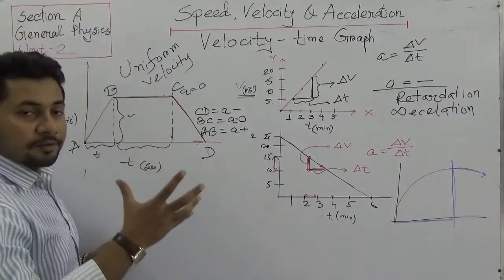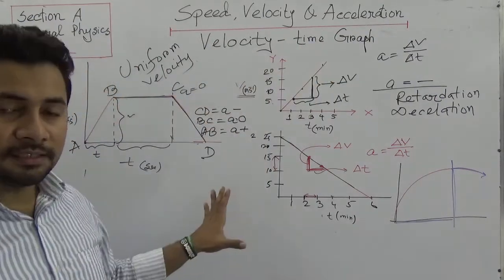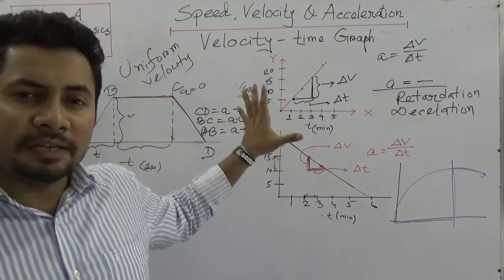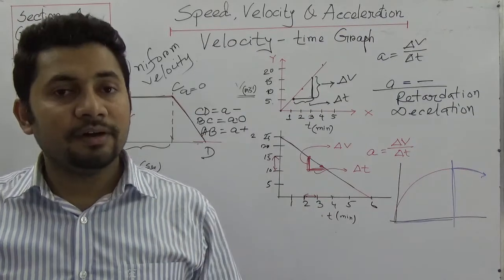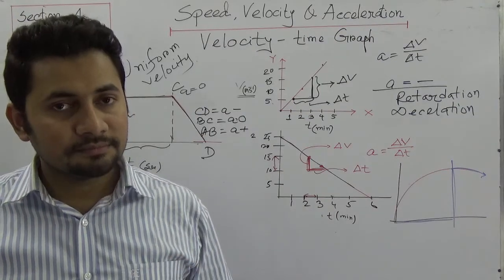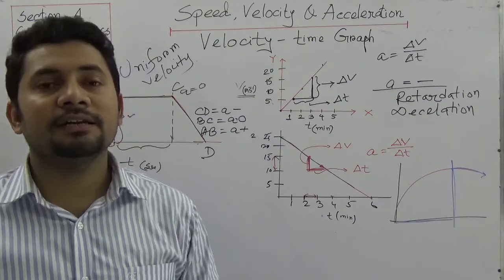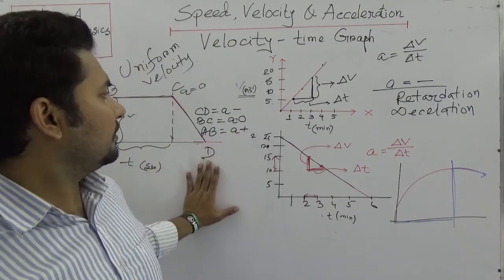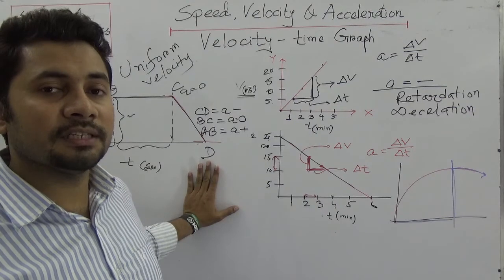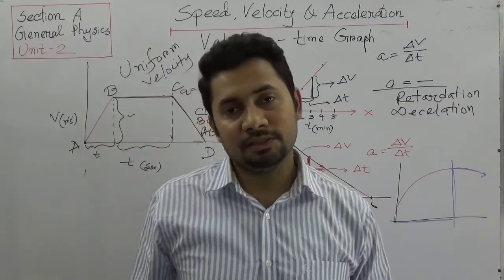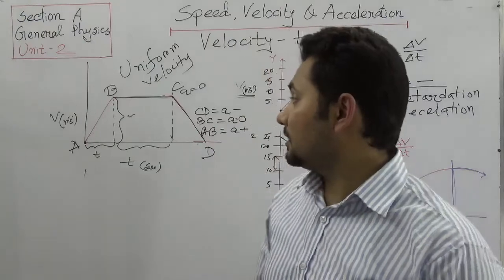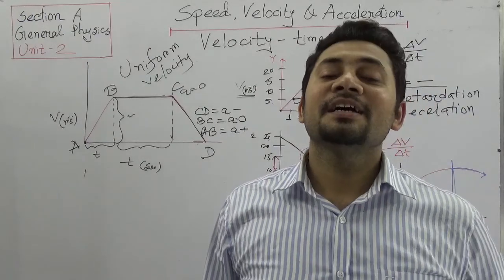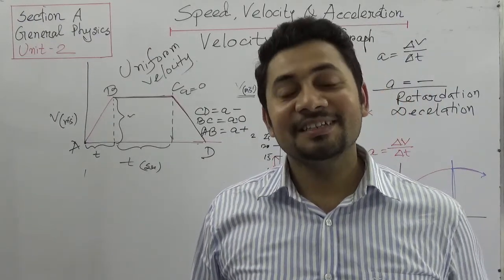So this very common velocity-time graph has been explained. When you study, you will definitely draw these things and think about what is given. This is a primary explanation regarding velocity and time. From the mathematical explanations, this type of graph you will see very commonly in this chapter. See you next time, please stay well, stay blessed. Bye.